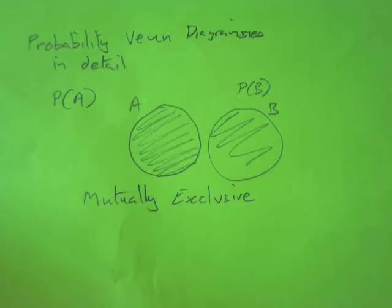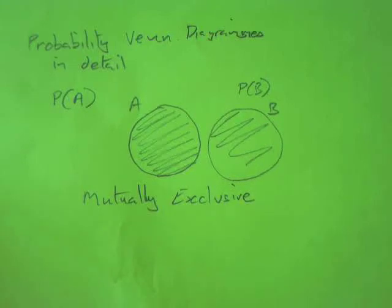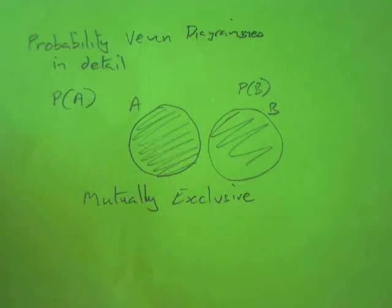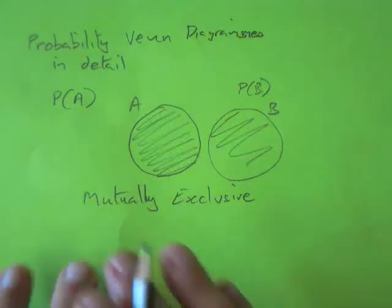For instance, the probability that a middle school kid plays rugby would be group A, and a high school kid plays rugby group B. Now, you can't be both a middle school kid and a high school kid at the same time. Even if you're middle school age and at high school, you're a high school kid. So those are mutually exclusive, and that's what the picture looks like.